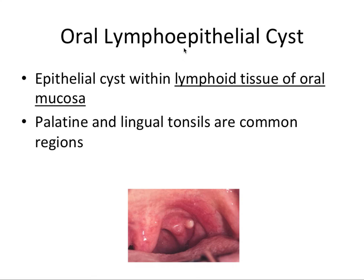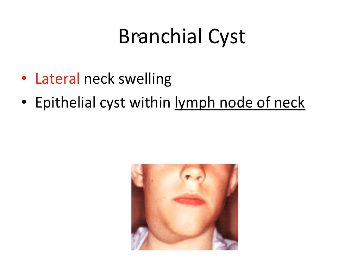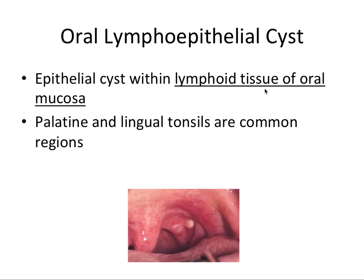Oral lymphoepithelial cysts are basically the intraoral equivalent of the branchial cyst — also an epithelial cyst within lymphoid tissue, but this time in oral mucosa rather than on the lateral neck. If you think of lymphoid tissue intraorally, the palatine and lingual tonsils come to mind, and those are the most common regions where these little cysts are found.